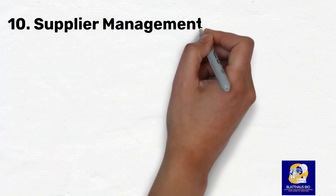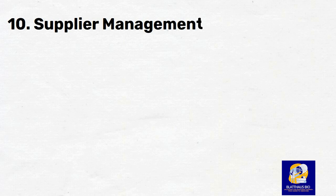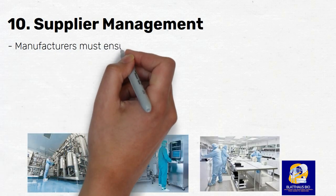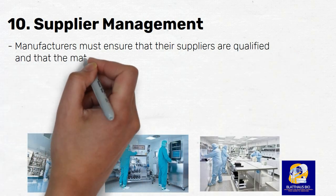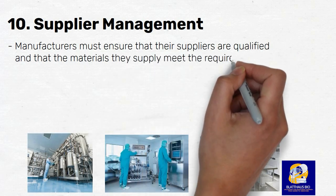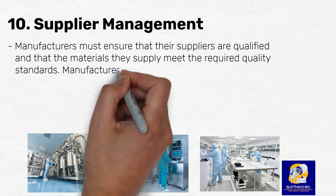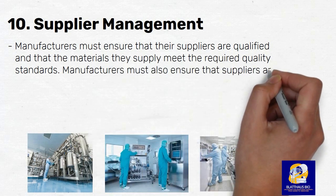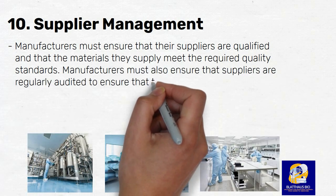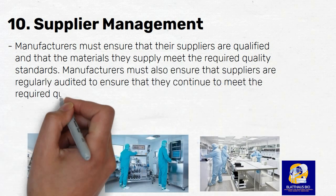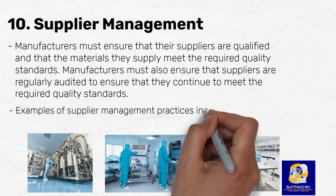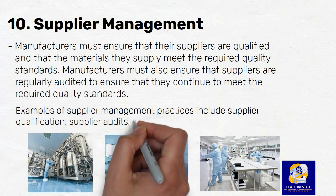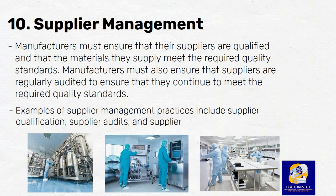Number 10: Supplier Management. The tenth principle of GMP is the management of suppliers. Manufacturers must ensure that their suppliers are qualified and that the materials they supply meet the required quality standards. Manufacturers must also ensure that suppliers are regularly audited to ensure that they continue to meet the required quality standards. Examples of supplier management practices include supplier qualification, supplier audits, and supplier monitoring.